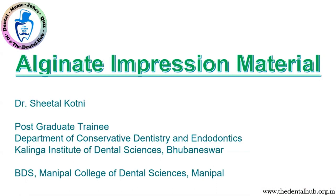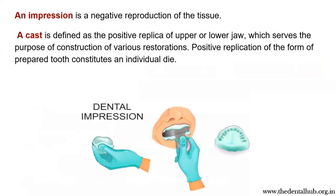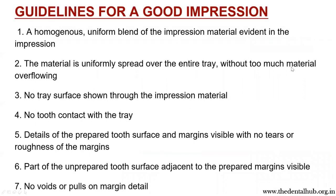Before we dive into it, let's know what an impression is. An impression is a negative replica of the tissue. A cast is the positive replica of upper and lower jaw, which serves the purpose of construction of various restorations. Positive replication of the form of the prepared tooth in the form of an individual tooth constitutes an individual die.